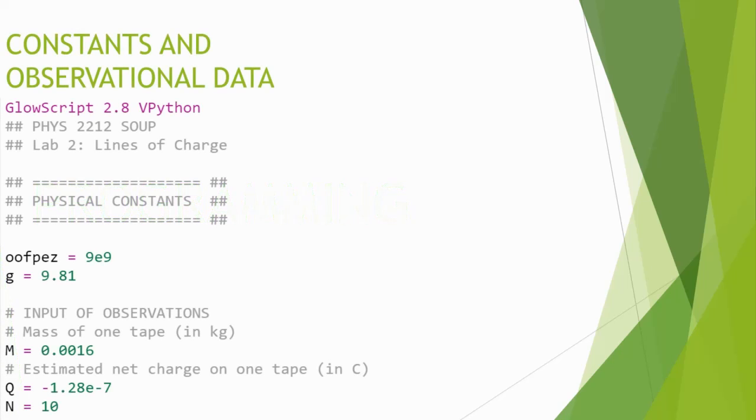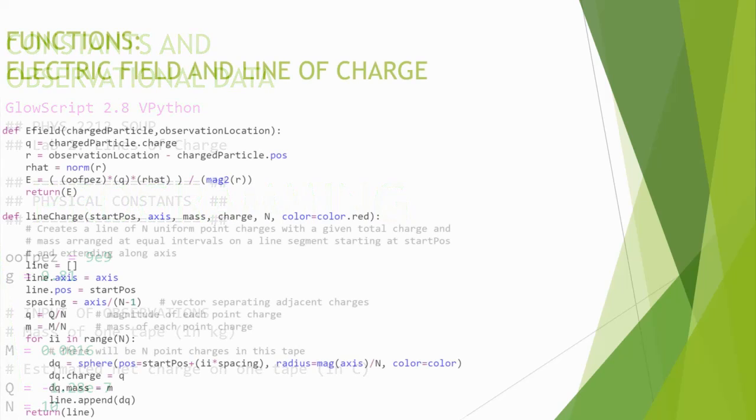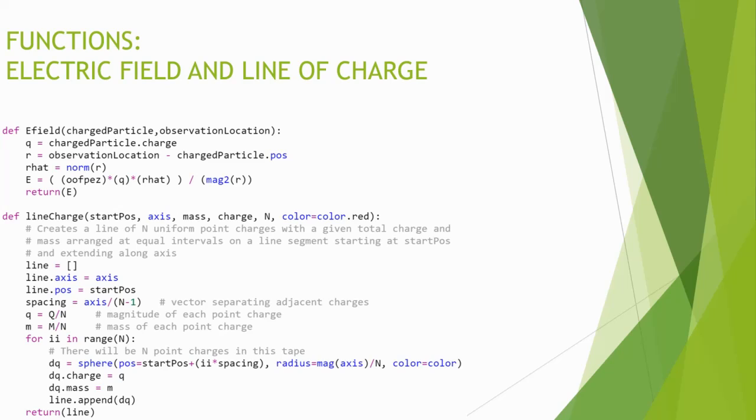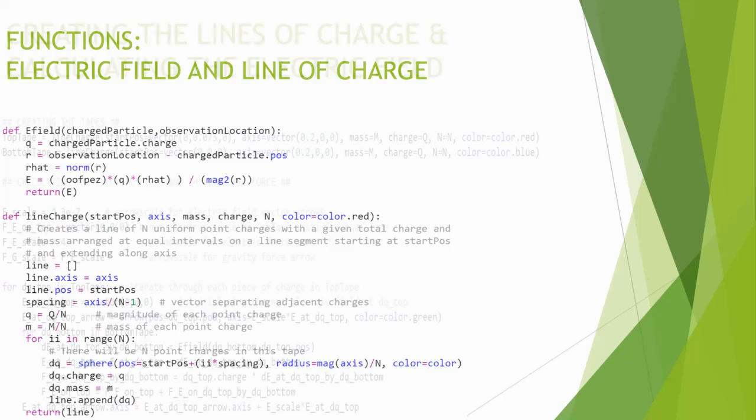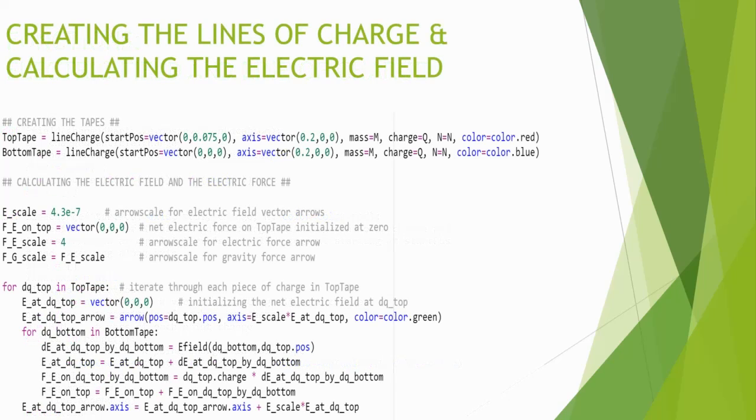First, all data and constants were input into the program. Then, a function that determines the electric field acting on a point and a function that creates a line of similarly charged spheres were defined and created. Using these functions, two lines of spheres were created to represent the linear distribution of charges along the pieces of tape, fittingly named top tape and bottom tape.